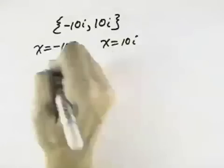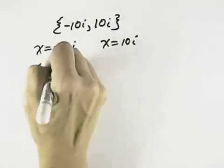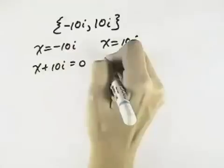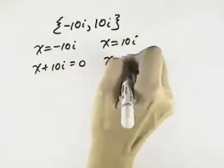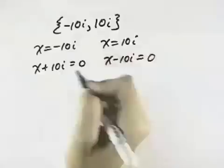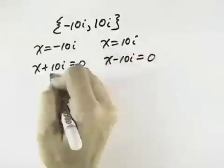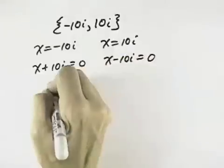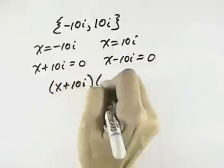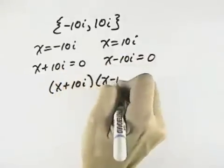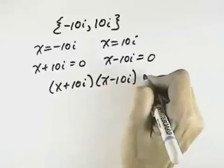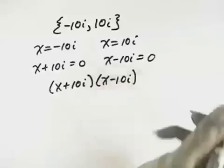factors have 0 on one side. So if I add 10i, I'll have 0 on one side. And here if I subtract 10i, I'll have 0 on one side. So I can take those factors — those factors came from my equation — and multiply those factors back together again, working backwards to get to my equation.